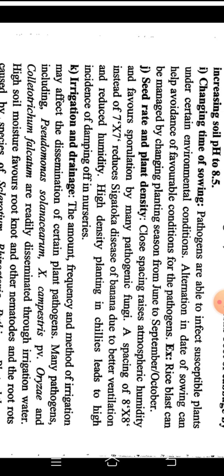Changing the sowing time can help eradicate pathogens. Pathogens are able to cause impact when susceptible plants are under certain environmental conditions. Altering the date of sowing can help avoid favorable conditions for the pathogen. For example, rice blast can be managed by changing the planting season from June to September–October. Regarding seed rate and plant density, close spacing increases atmospheric humidity and favors sporulation of many pathogenic fungi. Spacing of 8×8 instead of 7×7 reduces Sigatoka disease of banana due to better ventilation and reduced humidity, as reducing plant crowding automatically reduces disease intensity.